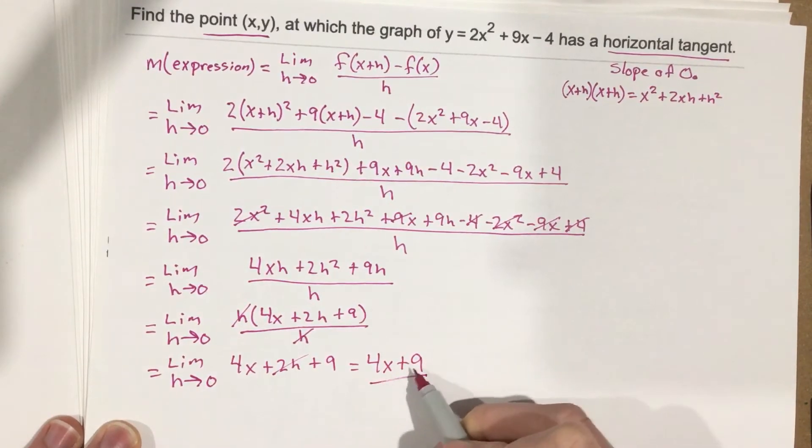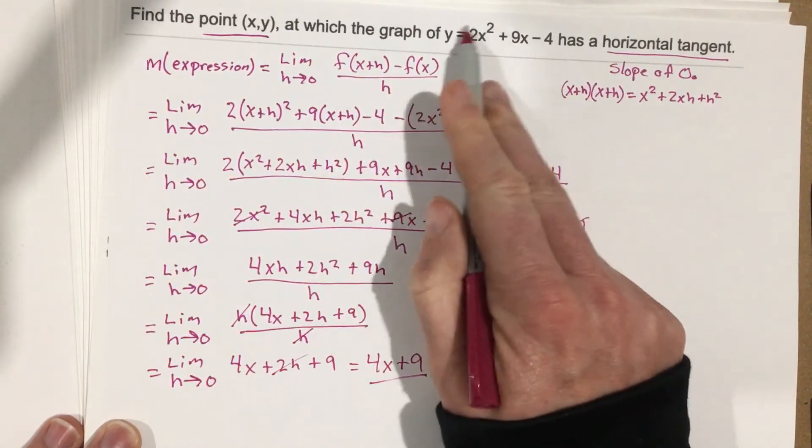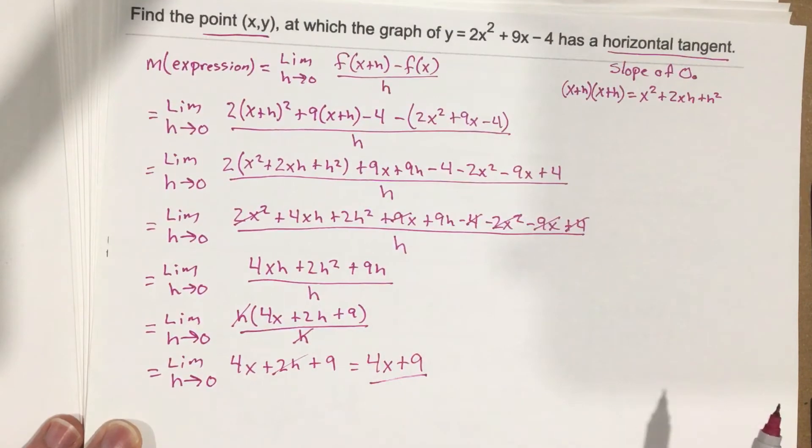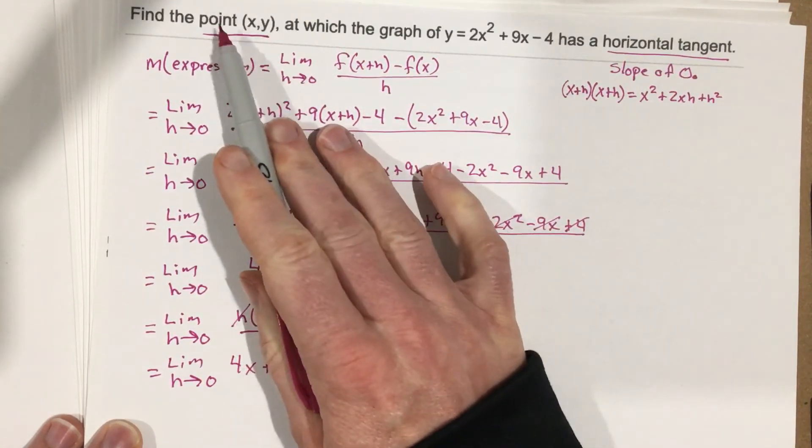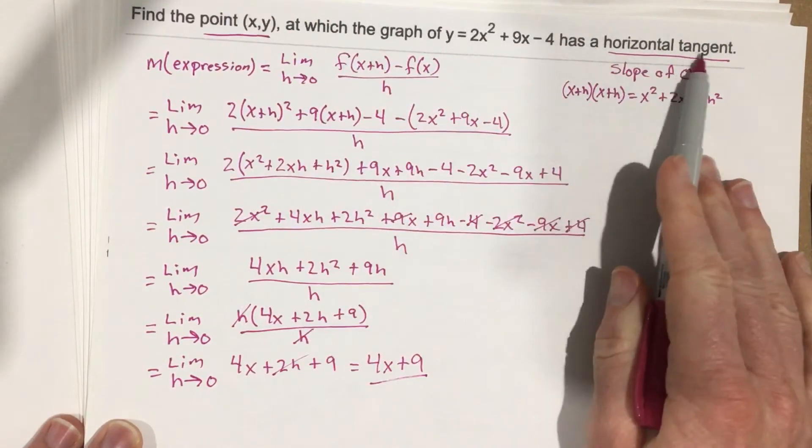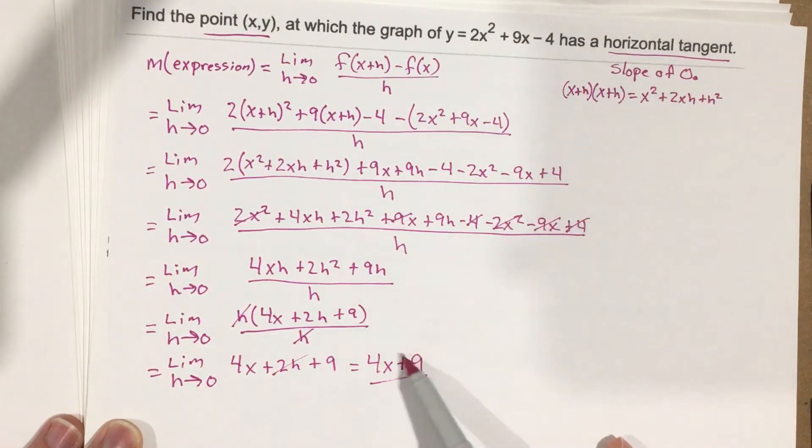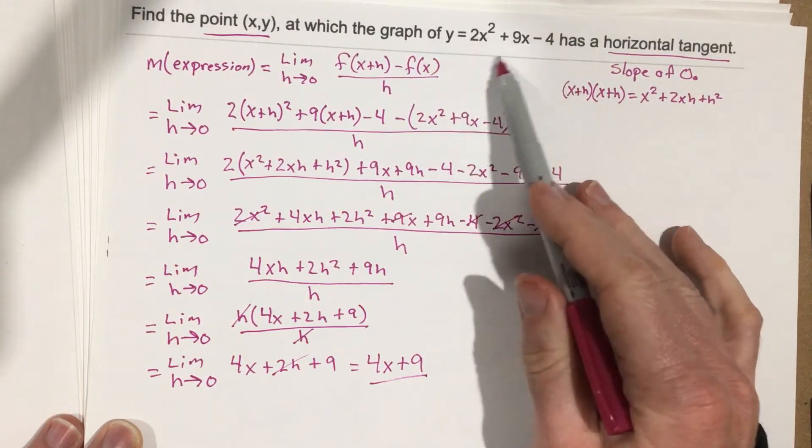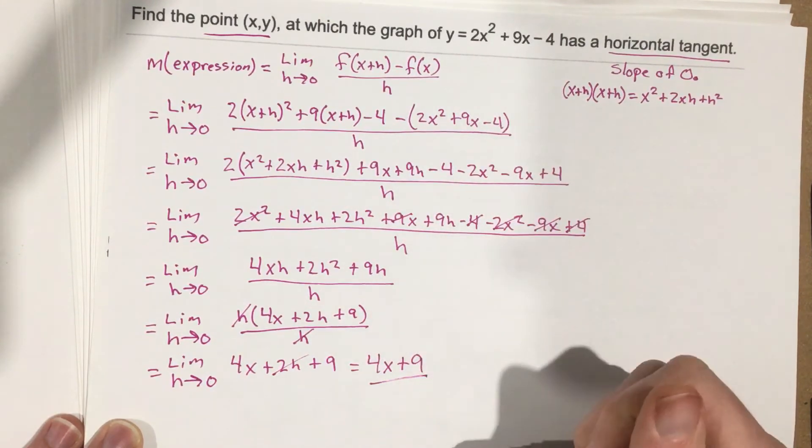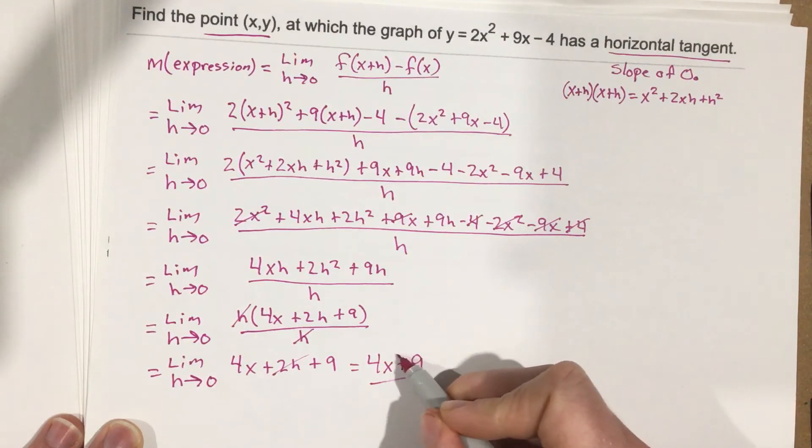This is the expression for the slope for this line. Now here's the key with the whole problem. They want us to find the point where we have a horizontal tangent. Well, this expression gives us a slope for any part on this quadratic. So if we want to know where it has a horizontal tangent, all we need to do is take this slope expression and say the slope is equal to 0. So we'll say 4x + 9 equals 0.